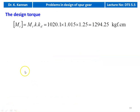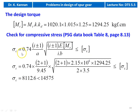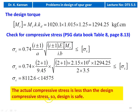Design torque = MT × K × Kd = 1,020.1 × 1.015 × 1.25 = 1,294.25 kgf·cm. Check for compressive stress: σc = 0.74 × (i + 1) / A × √[(i + 1) × E × [MT] / (i × B)] = 0.74 × 3 / 9.45 × √[3 × 2.15×10⁶ × 1,294.25 / (2 × 3.5)] = 8,112.6 kgf/cm², which is less than 14,575 kgf/cm². Design is safe.